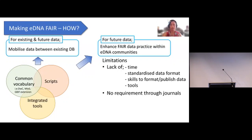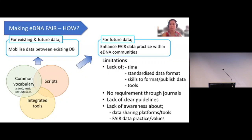There is also no requirement through journals. Journals do require a data sharing statement — authors must state where data is shared or say data will be shared upon request — but there is no requirement for the format of the data, and that's why the data is currently not FAIR. There is also lack of clear guidelines, lack of awareness about data sharing platforms and tools. People want to share data but don't know how or what tools are available. Lack of awareness about FAIR data practice and values is actually really common for ecologists and molecular biologists.